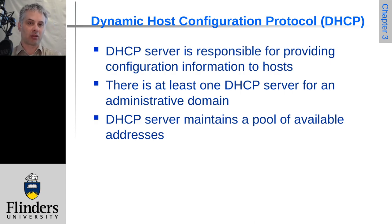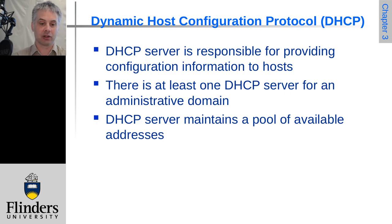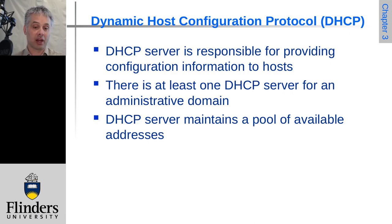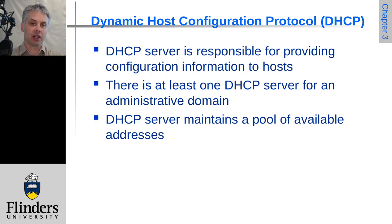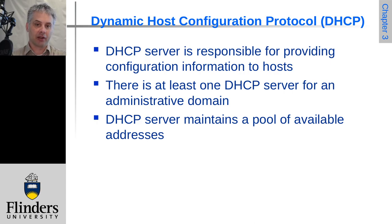DHCP exists to automate this process so that a computer connected to a network running DHCP can automatically obtain this information and operate correctly. The DHCP server responds to these requests from hosts. You need at least one DHCP server for a network or internetwork — for example, in an organisation you would typically have at least one DHCP server serving many networks or subnets.